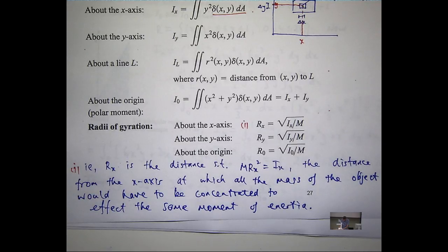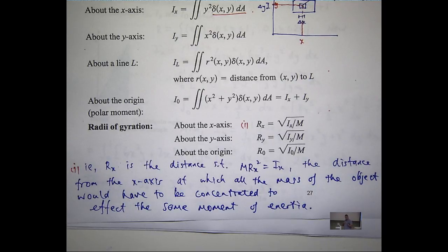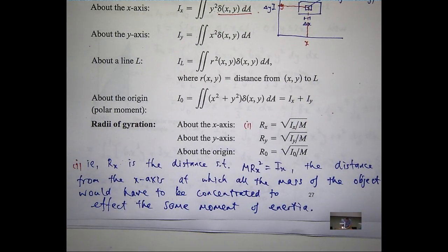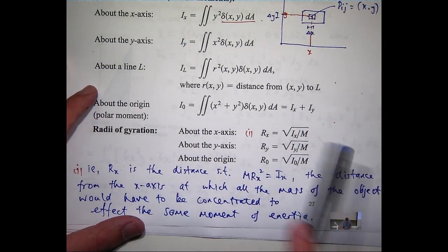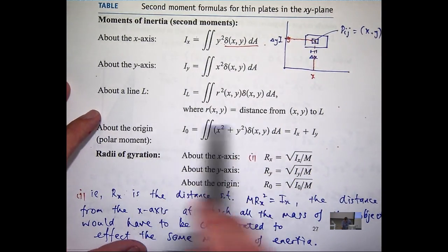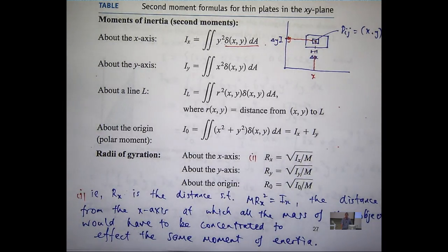For example, if you have a circular disc rotating in the xy-plane about the z-axis, the radius of gyration about the z-axis gives you the radius of a thin ring such that both have the same moment of inertia. The radii of gyration aren't super important; the key formulas are I_x, I_y, and I_0. There's no guarantee the radii of gyration will appear on the exam — we'd likely provide those on a formula sheet.